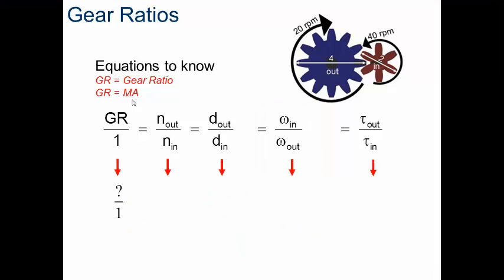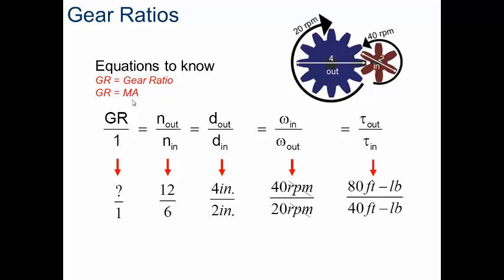So it doesn't matter which set of numbers I use. I'm still going to get the exact same ratio of a 2 to 1 ratio from this simple gear train.